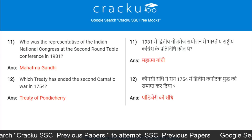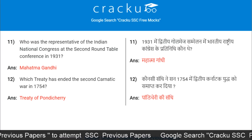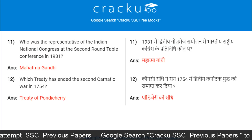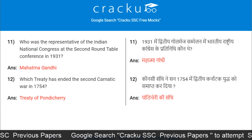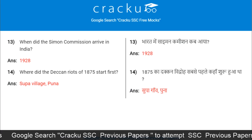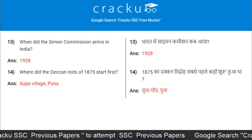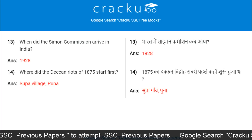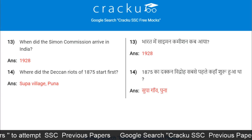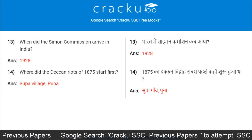Which treaty ended the Second Carnatic War in 1754? Treaty of Pondicherry. When did the Simon Commission arrive in India? 1928. Where did the Deccan riots of 1875 start first? Soopa Village, Poona District.